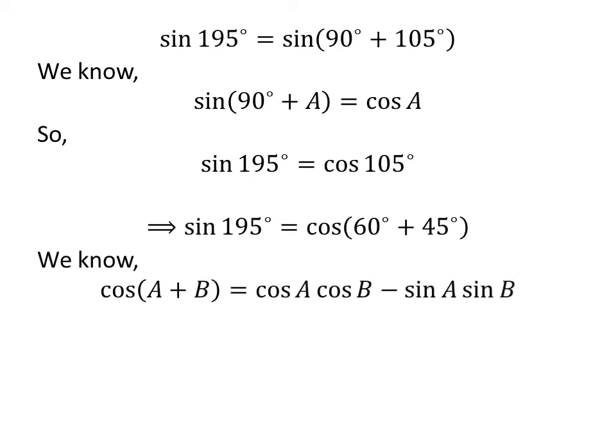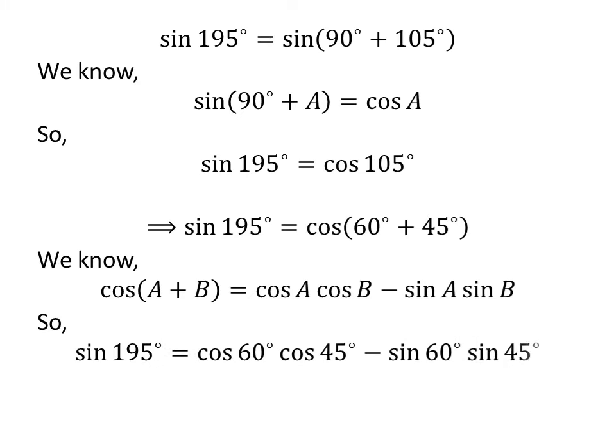We know cosine of A plus B is equal to cosine of A times cosine of B minus sine of A times sine of B. Applying this identity gives us sine of 195 degrees is equal to cosine of 60 degrees times cosine of 45 degrees minus sine of 60 degrees times sine of 45 degrees.